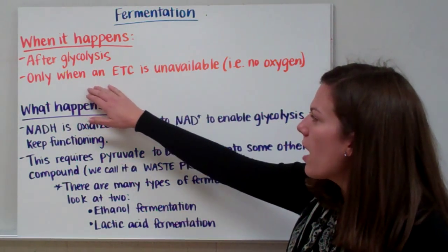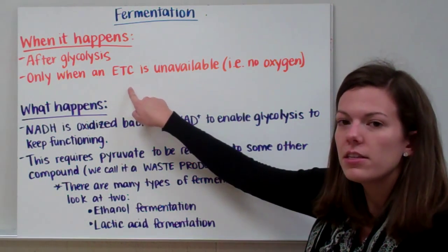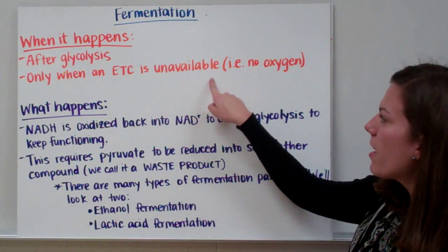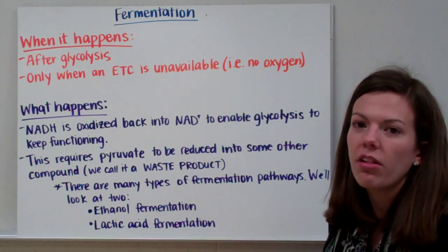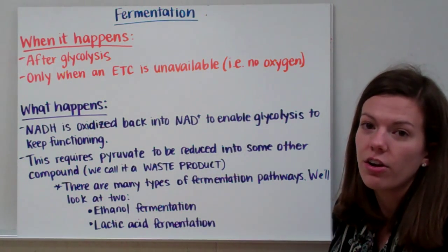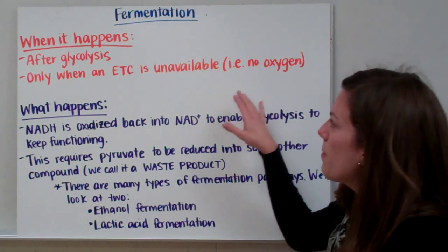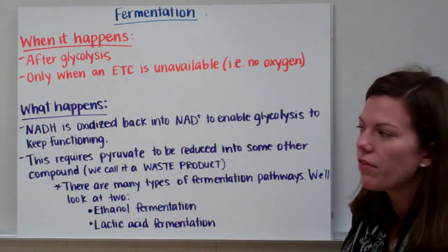Fermentation only happens when an electron transport chain, abbreviated as ETC, is unavailable, or when our terminal electron acceptor is not currently available. For example, if we have no oxygen. So fermentation happens when our ETC or electron transport chain is unavailable.